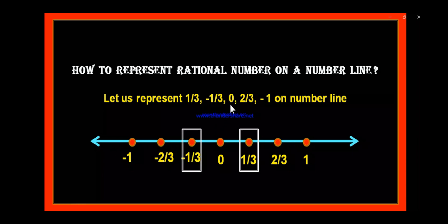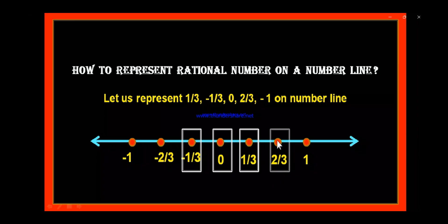Next is 0 — this is the point where you can find 0. Next, 2 by 3: this is minus 2 by 3 and this is plus 2 by 3, so let us box plus 2 by 3. Next is minus 1 — you can find minus 1 here, so let us box this minus 1.